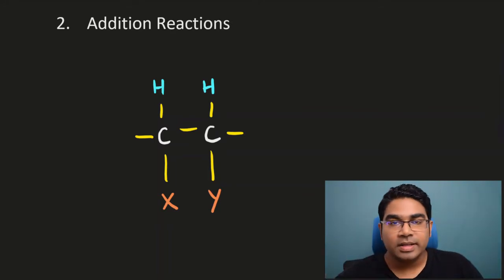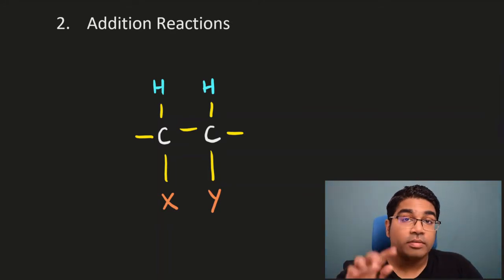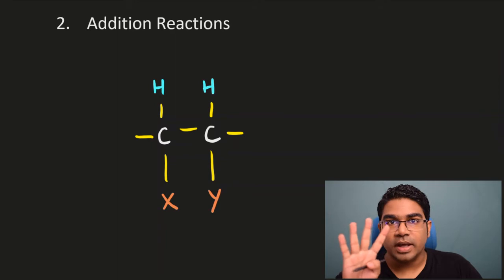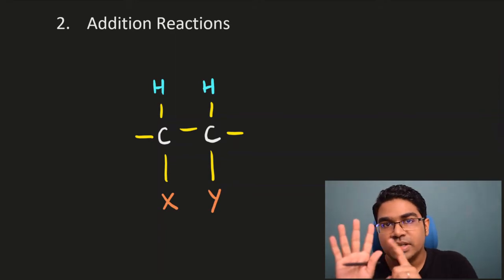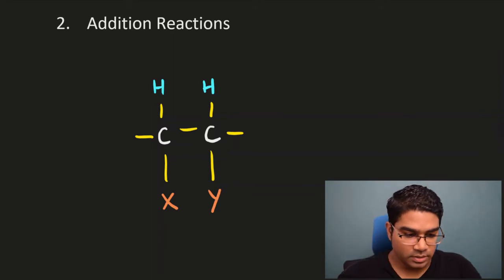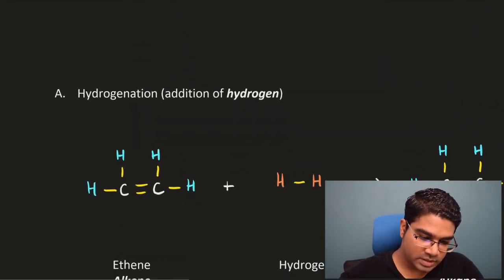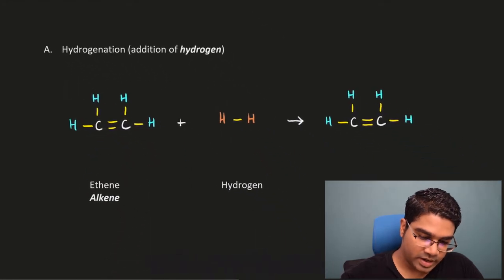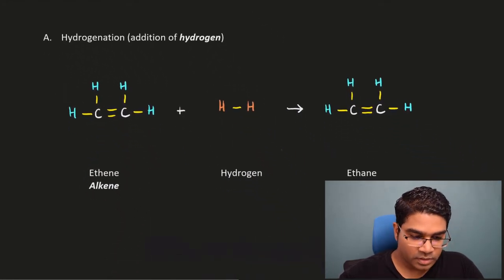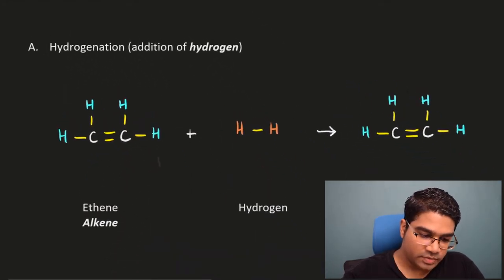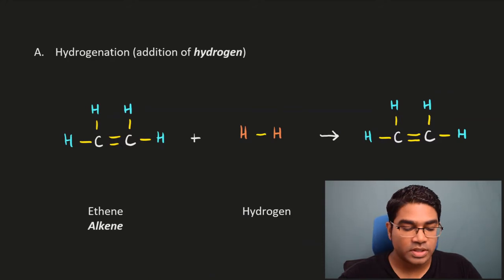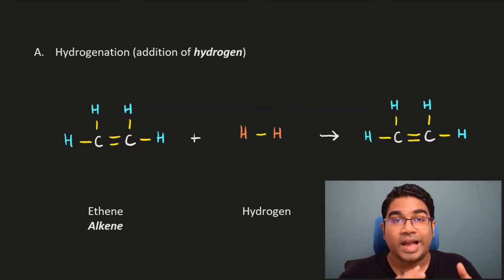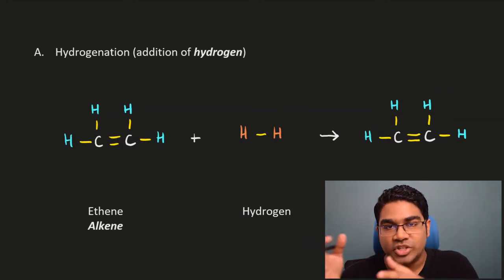There are many things that can be added to alkenes. We are going to look at four things that we add to alkenes, and one more special addition reaction. The first is addition of hydrogen. The name of the process is very easy — when you add hydrogen, the process is called hydrogenation.